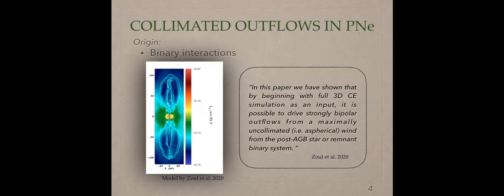There is a recent paper of Sol, where they built a model considering a binary interaction. He said in the paper, in this paper, we have shown that by beginning with full 3D a common envelope simulation as an input, it is possible to drive a strongly bipolar outflow from a maximally unpolarized wind from the post-AGB star or remaining binary system. In this image, you can observe one of the results of this model, and you observe these bipolar jets in this model.